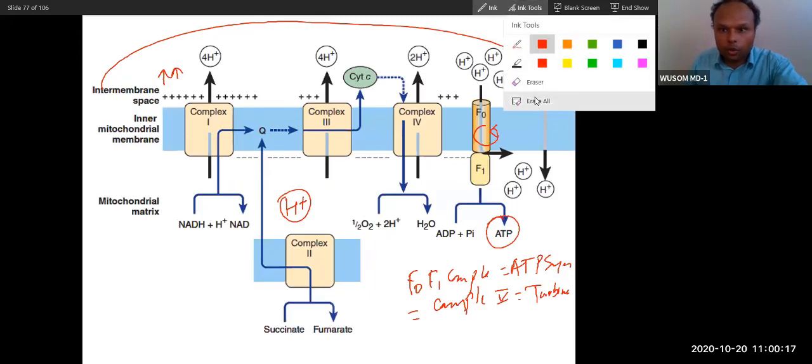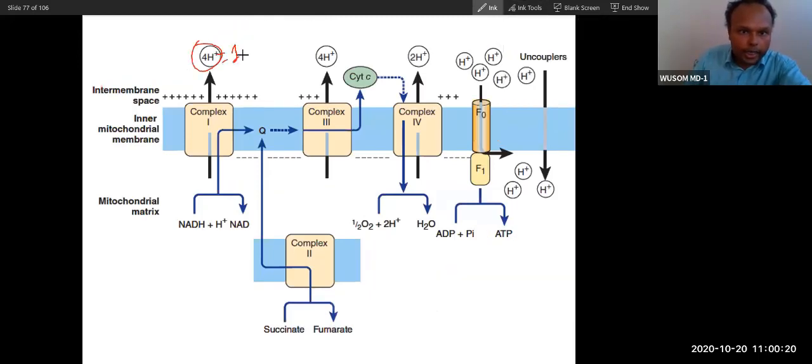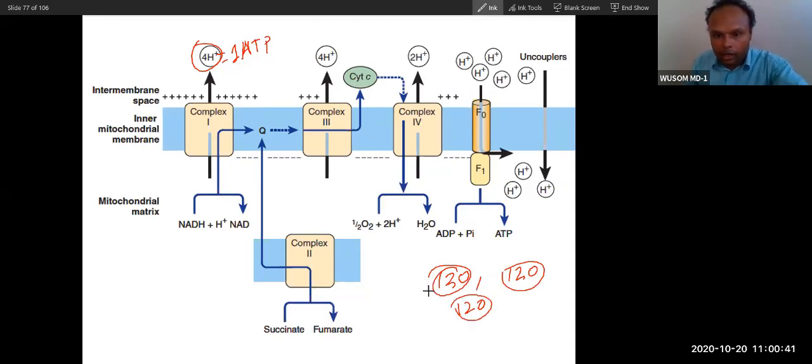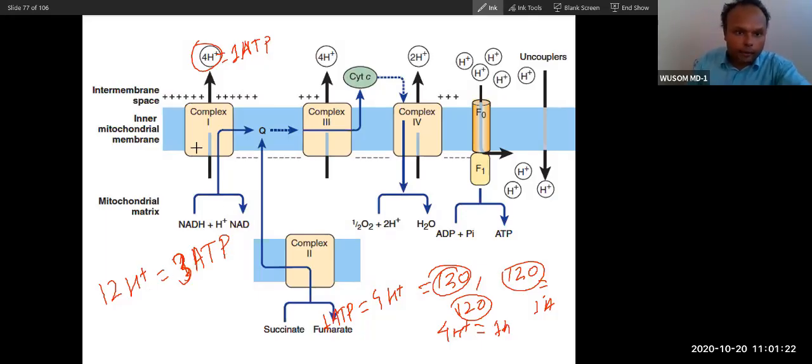Now you can see 4 protons will produce 1 ATP. There will be 3 rotations. 120 degree rotation, 120 degree rotation, and 120 degree rotation. Rotation happens in 3 steps. 120 degree rotation requires 4 hydrogen. This will produce 1 stroke and 1 ATP. Again, the next 120 degree rotation will produce 1 ATP. It will require 4 protons and produce 1 ATP. This again will require 4 protons and produce 1 ATP. So you can see 12 H+ equals 3 ATP.